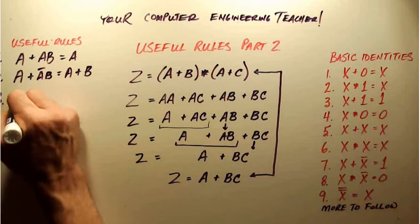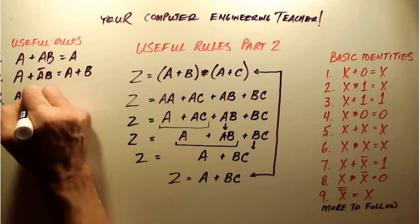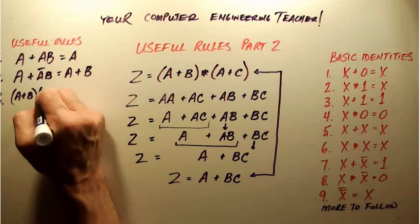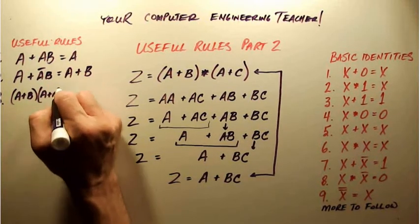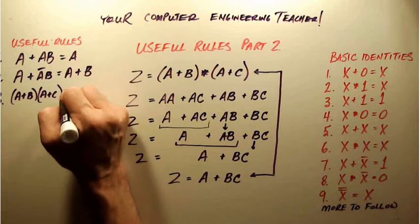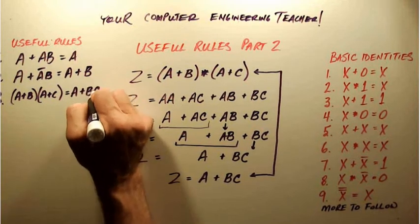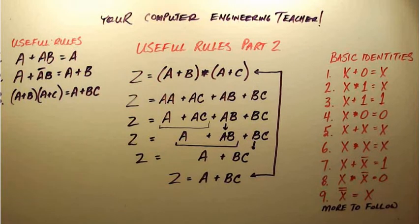So A plus B, and when that's ANDed with A plus C, it comes out to A plus BC. Like I said, we can use those useful rules later on when we're doing more complex equations.